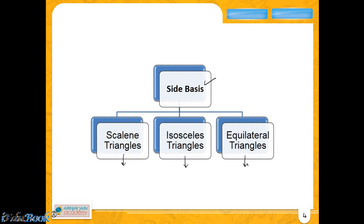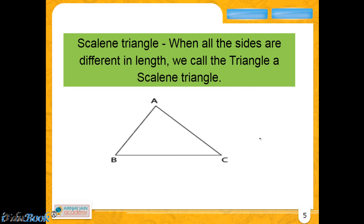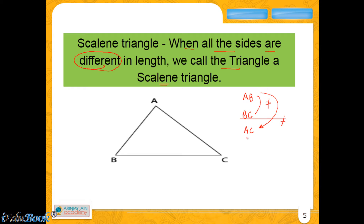Let us look at each one of them and the characteristics that classify them into these different categories. A scalene triangle: when all the sides are different in length — please mark the word 'different' — we call the triangle a scalene triangle. In this case, there are three sides of the triangle: AB, BC, and AC. In a scalene triangle, AB will not be equal to BC, AB will not be equal to AC, and BC will not be equal to AC, meaning none of these three sides are equal to each other.